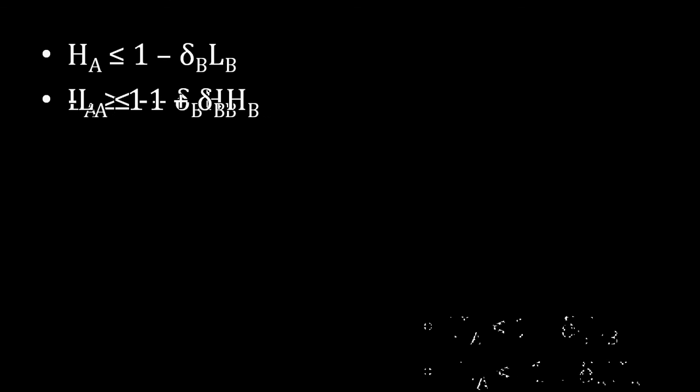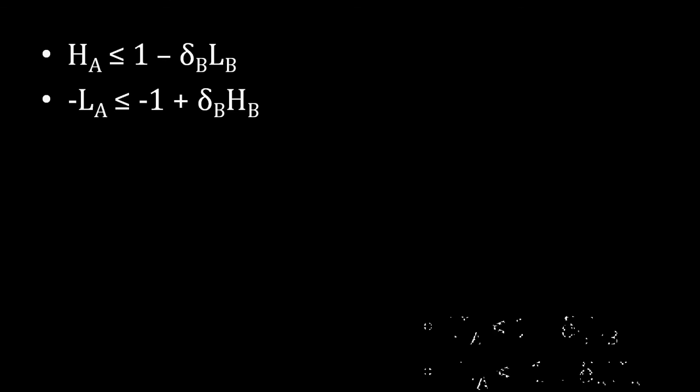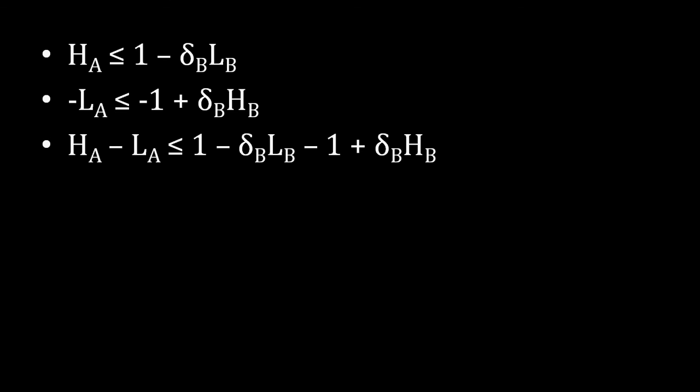I can multiply the second bullet point by negative 1 and then add the two inequalities together — adding left side to left side and right side to right side. This is mathematically legitimate: if you take two greater values and add them, the result is greater than the two lower values added. This gives us: H_A minus L_A is less than or equal to the two right-hand sides added together, which simplifies to δ_B times (H_B minus L_B).